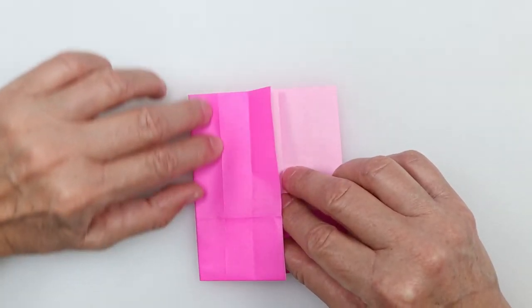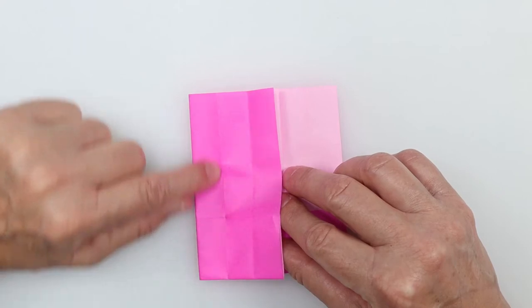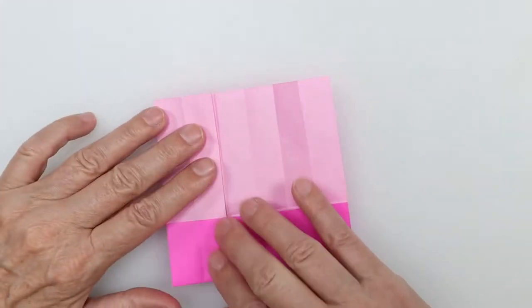And then I'm going to take the next crease right here, this next crease, and I'm just going to fold it backwards, kind of a zigzag.